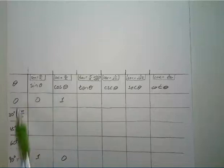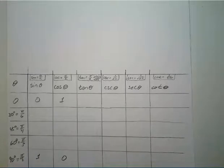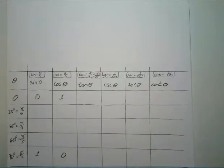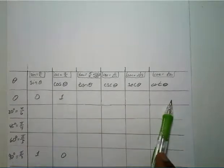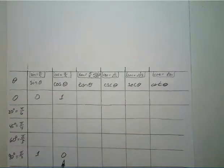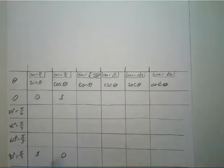Sine of 90 degrees, or pi over two, is equal to one, and cosine of 90 degrees is equal to zero. Once you know those four values, you can fill out everything for zero and 90 degrees — just memorize those four and you can remember all of them.